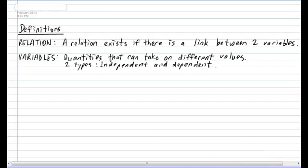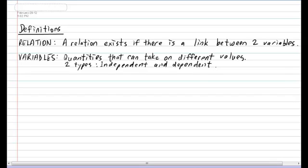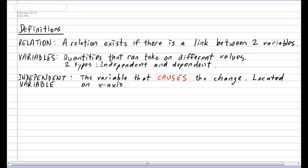Now let's define exactly what is meant by the independent variable. The independent variable is the variable that causes something else to change and is always located on the X axis on a Cartesian plane. For example, as you grow older it causes you to get taller, so your age is the independent variable because it causes your height to change.